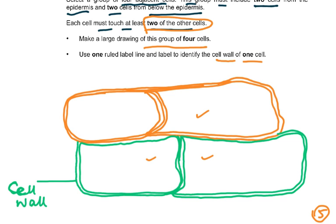The marks are: lines continuous, thin and sharp, no shading. Draw only four cells with each one touching two others. Draw two lines around each cell and three lines where the cells touch. You can see one line, two lines, and three lines where they touch. The two lines around each cell represent the cell wall. Both cells beneath the epidermis should be drawn deeper than the cells in the epidermis. Label line and label to cell wall — five marks for this diagram.